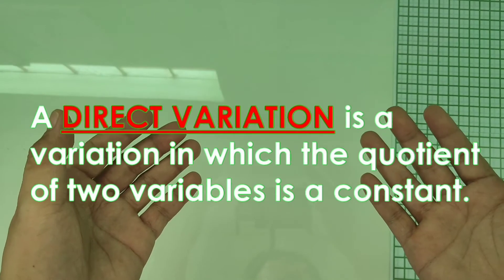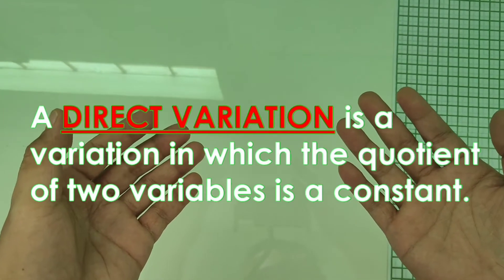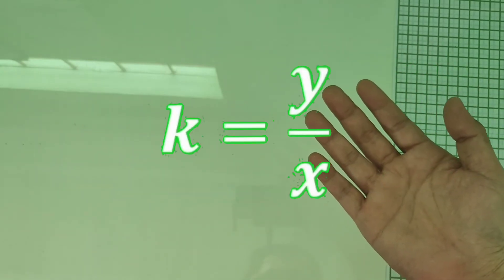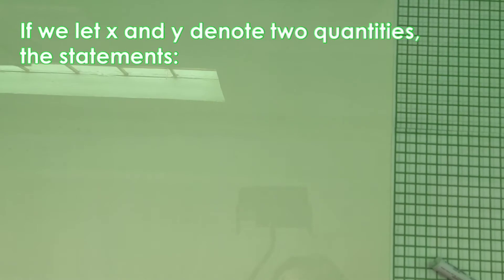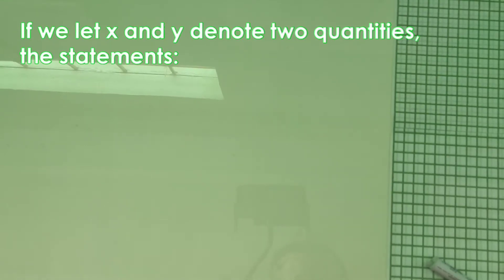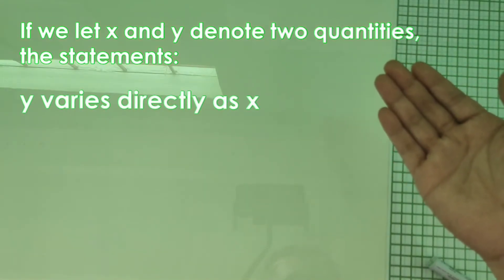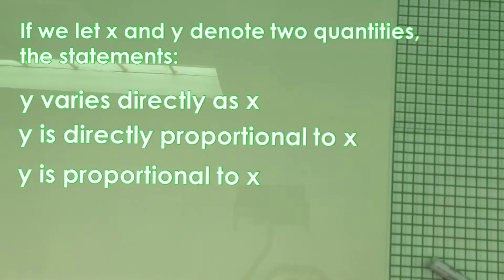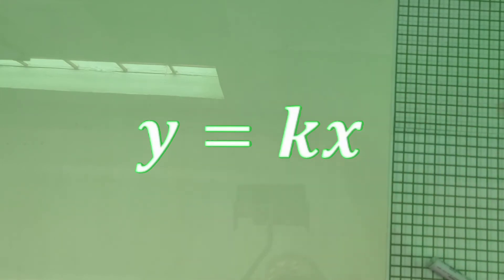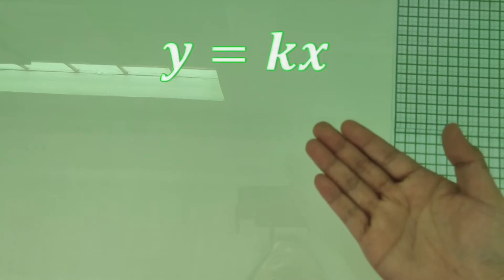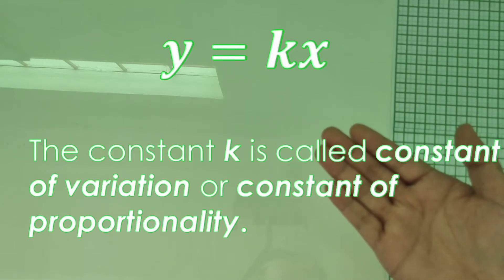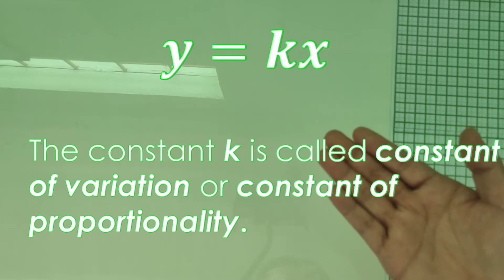A direct variation is a variation in which the quotient of two variables is a constant. The formula for solving the constant is k = y/x. If we let x and y denote two quantities, the statement 'y varies directly as x,' or 'y is directly proportional to x,' can be written as y = kx. The constant k is called the constant of variation or constant of proportionality.